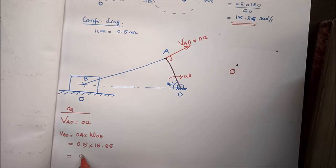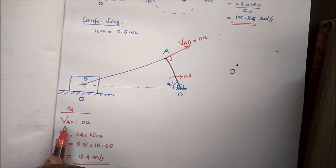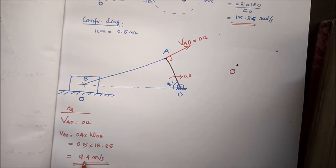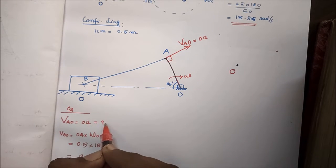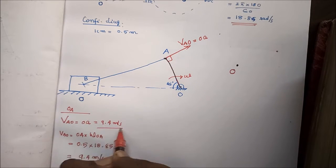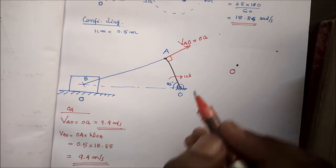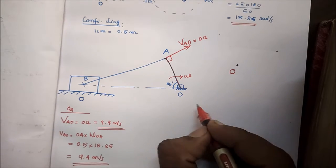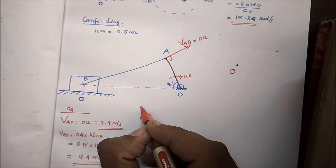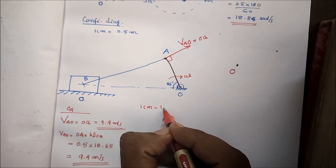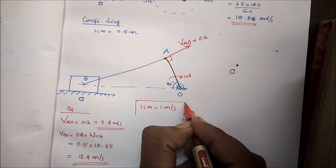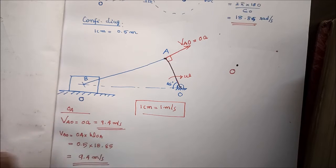The value is 9.4. The value of O is 9.4 meters per second. If you use the scale, 1 centimeter equals 1 meter per second. So 9.4 meters per second is represented by 9.4 centimeters.